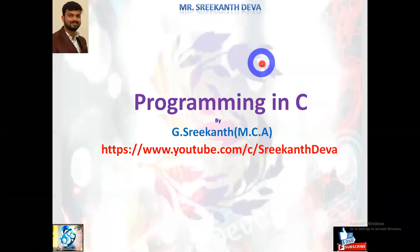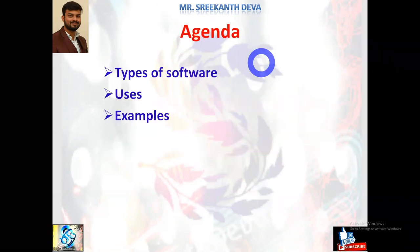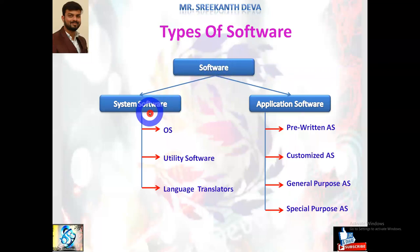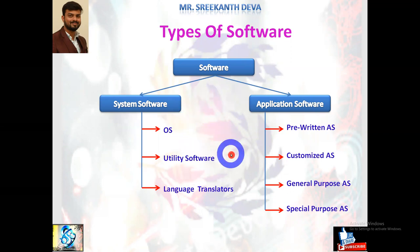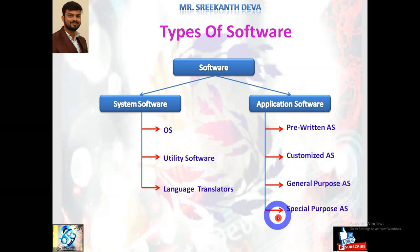Hello students, welcome back to programming in C language. I'm Srikan. We are discussing about program fundamentals. In the previous session I discussed in detail about what is software, need of software, types of software, hardware, and also the motherboard. In this session we try to discuss in detail about various different types of softwares. Softwares are basically categorized into two types: system softwares and application software.